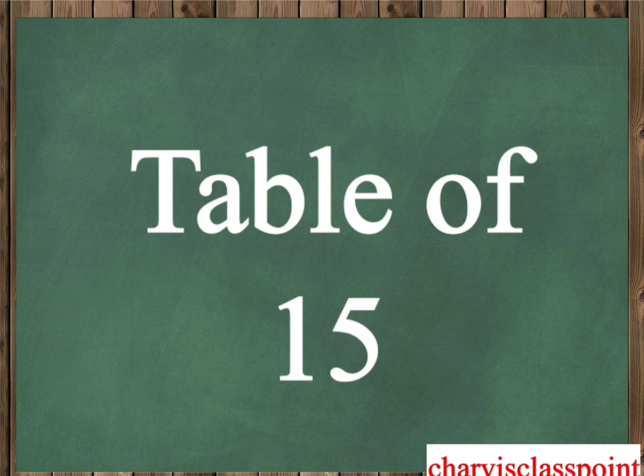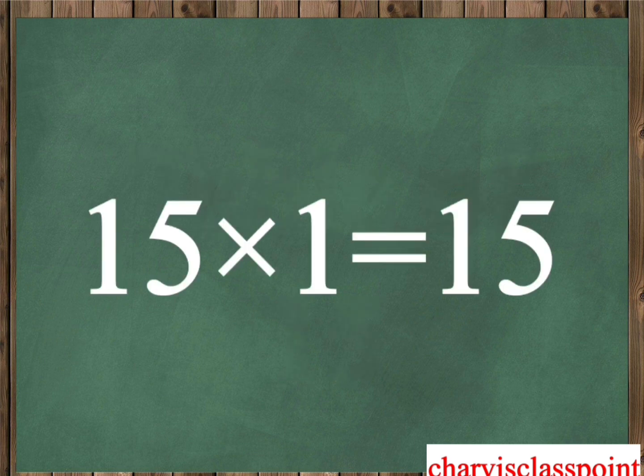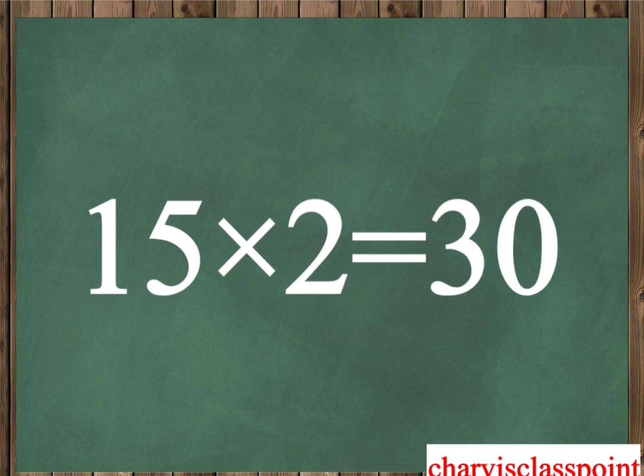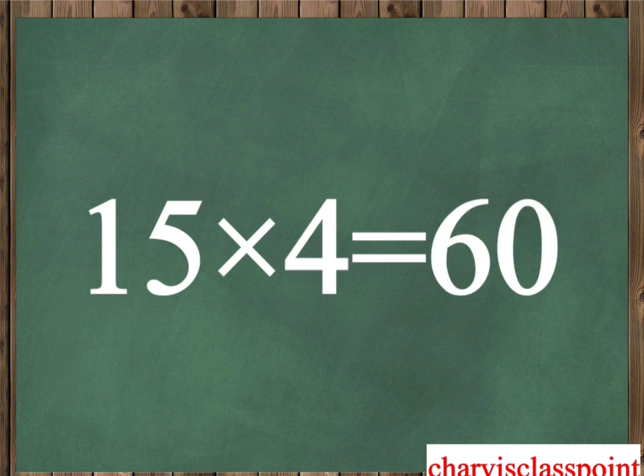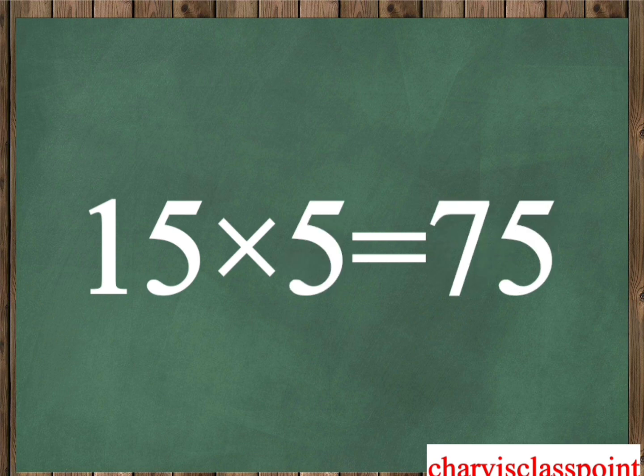Table of Fifteen. Fifteen one is fifteen. Fifteen two is thirty. Fifteen three is forty-five. Fifteen four is sixty.